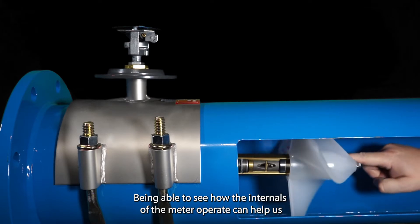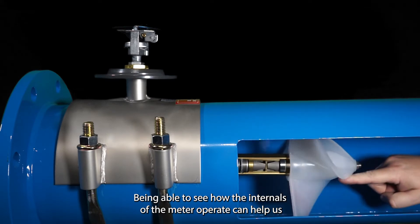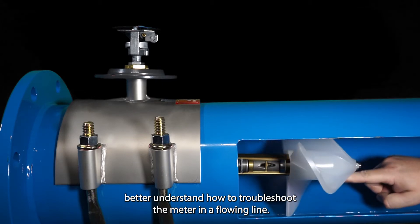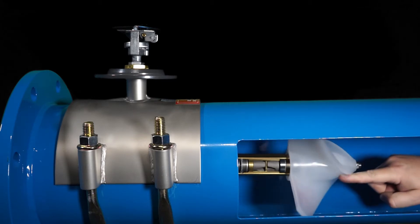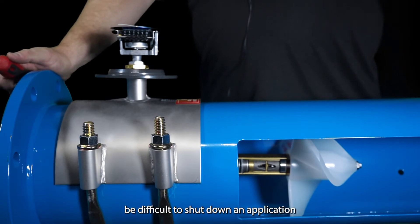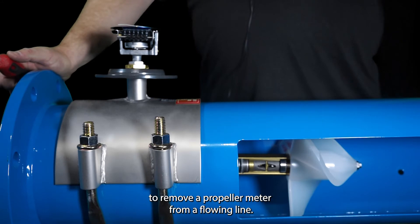Being able to see how the internals of the meter operate can help us better understand how to troubleshoot the meter in a flowing line. In some situations it may be difficult to shut down an application to remove a propeller meter from a flowing line.